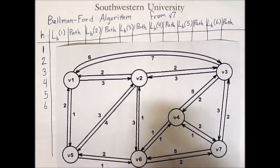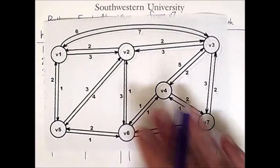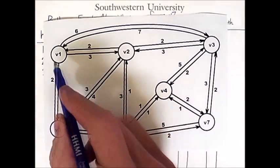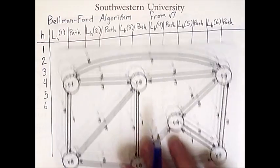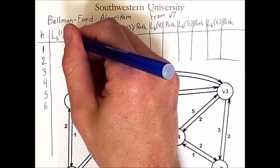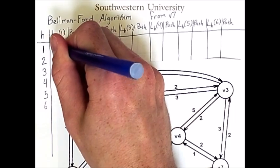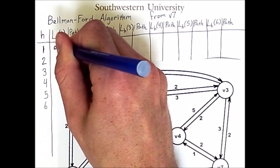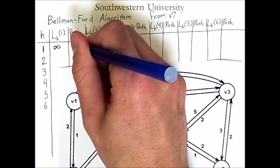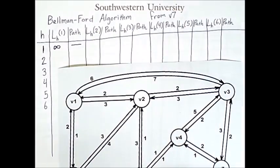Very first, there is no path from v7 to v1 in one hop. Therefore, the length of such a path is effectively infinity, and the path itself is left blank or empty.